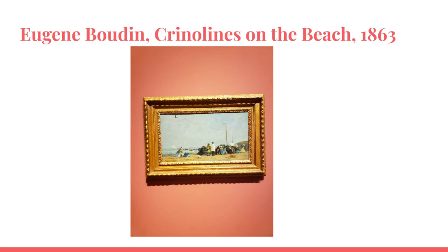The three elements of art which stand out in Crinolines on the Beach are line, color, and light. Boudin's brushwork indicates the loose and sketchy lines which convey the sense of movement and energy in the painting, also using color to create contrast and depth by using vivid and bright hues which capture the sunshine of the beach. His use of light is seen with the depiction of the shimmering reflections in the water and the contrast between the bright sunlight and the shadowy areas of the beach.